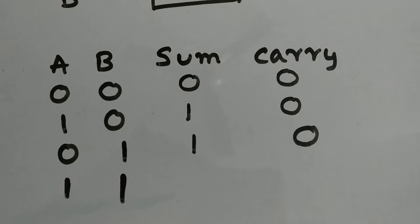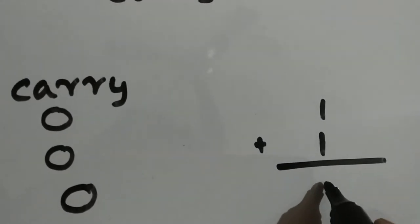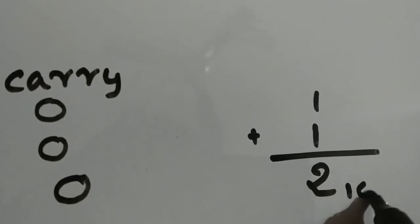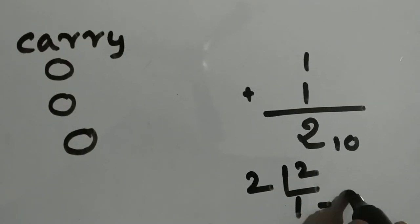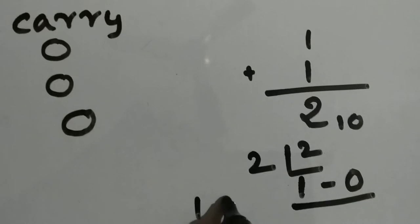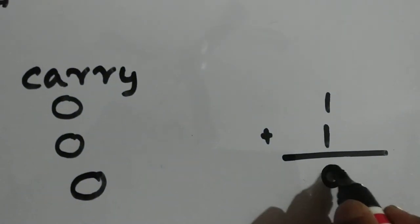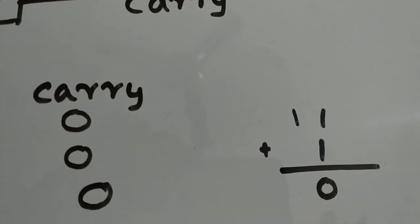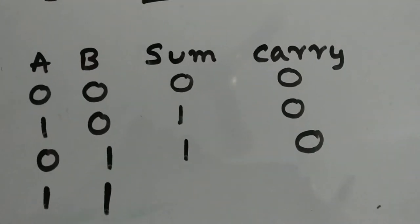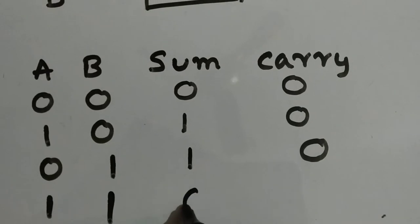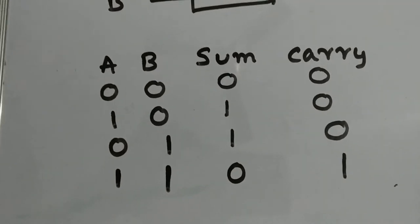Now for 1 plus 1, I'll show you a simple technique to remember this. What is 1 plus 1 in decimal? In decimal it is 2. Since the base is 10, we need to convert into binary. Dividing 2 by 2 gives us 1 remainder 0, so the binary representation of 2 is 10. Substituting this, we get sum as 0 and the 1 is given as a carry for the next higher significant bit. So in the truth table, sum is 0 and carry is 1.